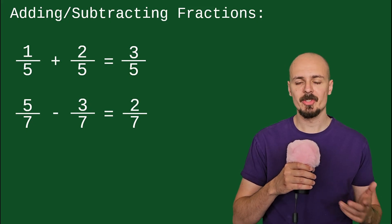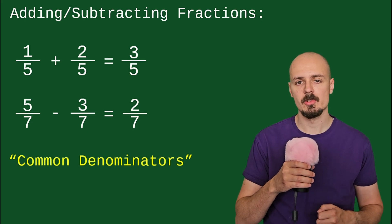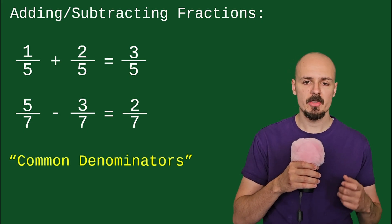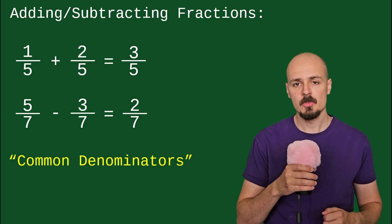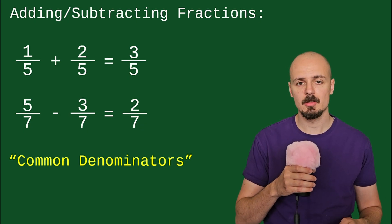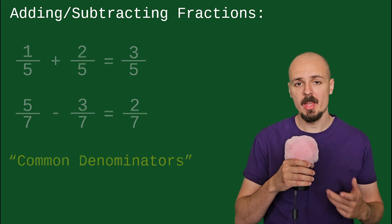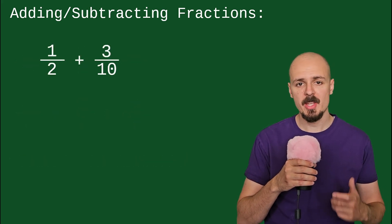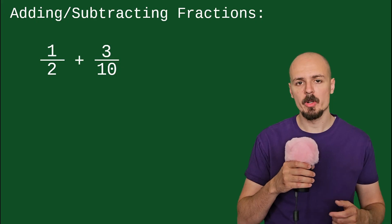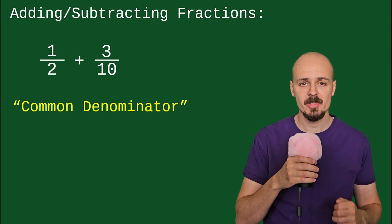These examples are relatively straightforward because we have what are called common denominators — the numbers on the bottom of these fractions are already the same, so we simply keep them and add the numerators. But what if these numbers are different? Say we have 1 half plus 3 tenths. It will be our first priority to find a common denominator, or change these fractions so that both their denominators are the same.